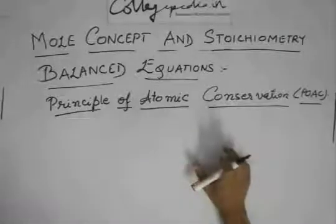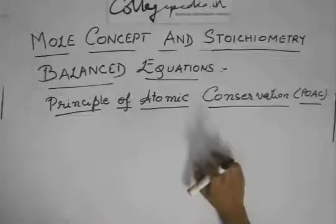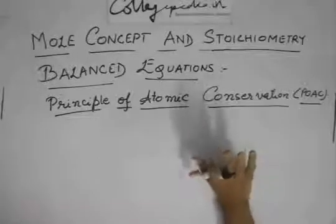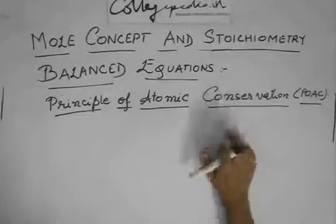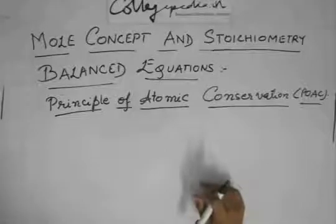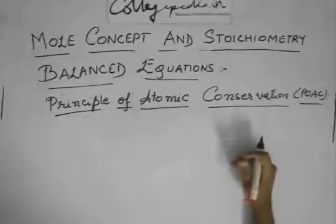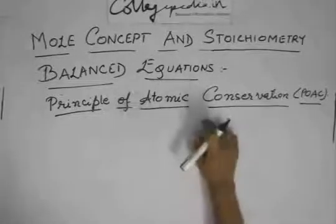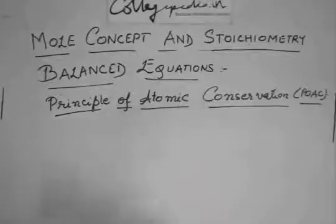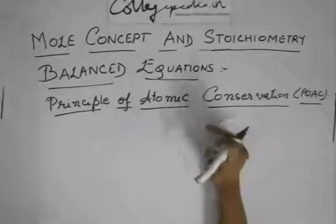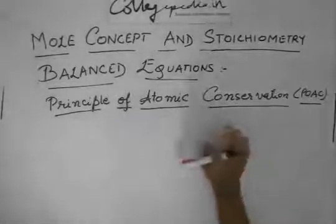So if you get a very simple reaction and if you don't know the balancing, then you better go for hit and trial. But if you feel that hit and trial would not suffice to the balancing, then go for this Principle of Atomic Conservation. Because this method will surely give you the correct balanced equation.